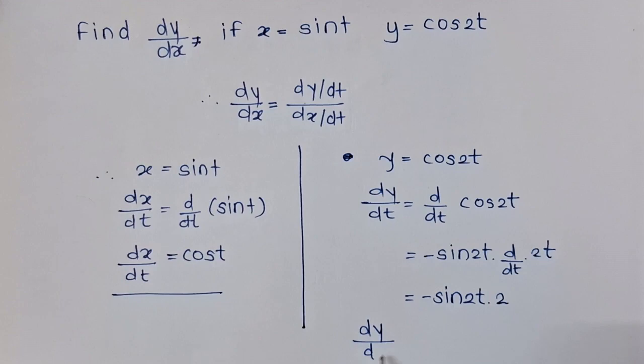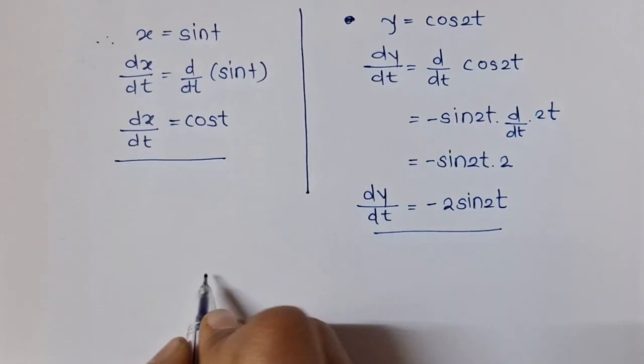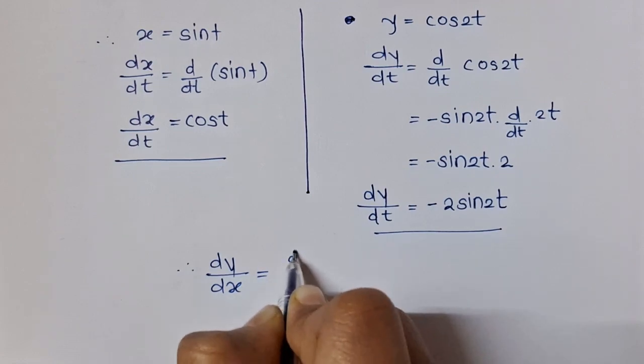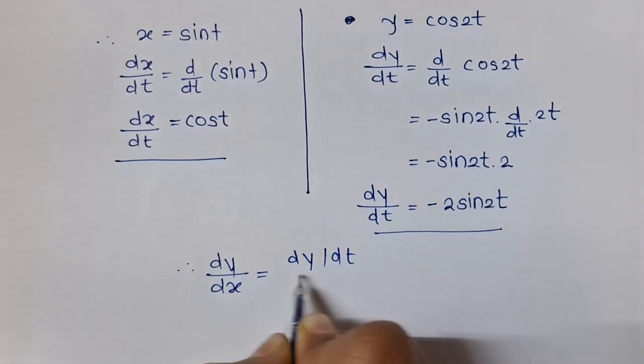So the final value of dy/dt is minus 2 sin 2t. Now let's substitute these values in the above equation, and we will have dy/dx is equal to dy/dt divided by dx/dt.